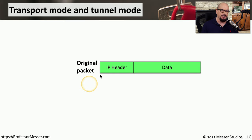In most IPSec implementations, you're going to be doing some type of encryption, and we use ESP, or the Encapsulation Security Payload, to provide that encryption functionality. This encrypts and authenticates across the IPSec tunnel. It commonly uses SHA-2 for the hash and AES for encryption, but you can change those parameters in the IPSec config. Extra headers are added on the front and trailers on the end, along with an integrity check value, so we can make sure the data goes through the network properly, with the IP header and data encrypted in the middle of the tunnel.